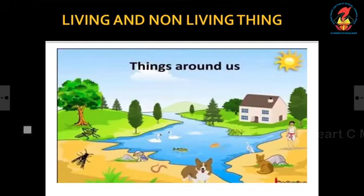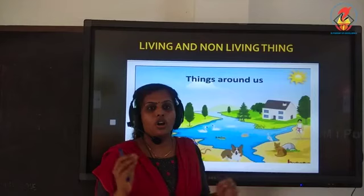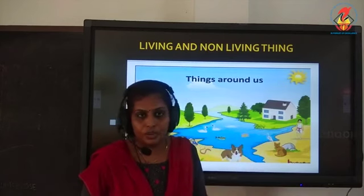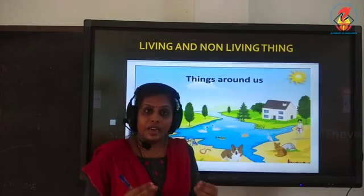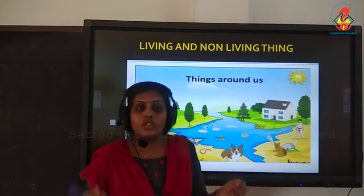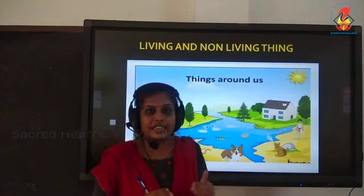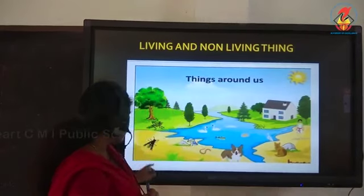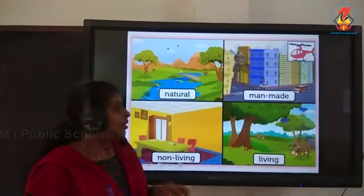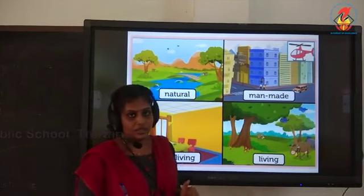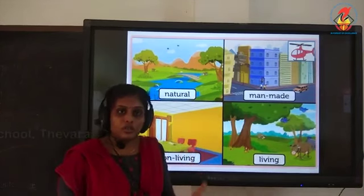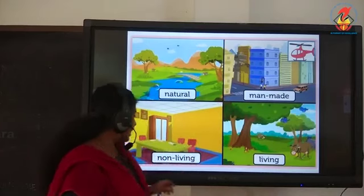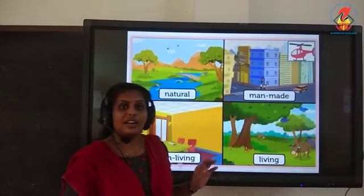Today we will learn our first chapter: Living and Non-Living Things. Living and non-living things are the things that you see around you. Some may be living and some may be non-living, and we should know how to categorize them. So let's see first what is a living thing.